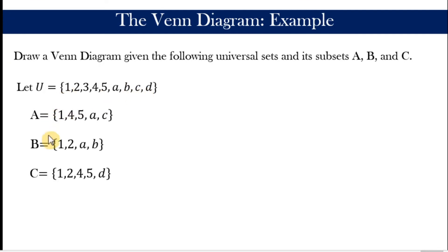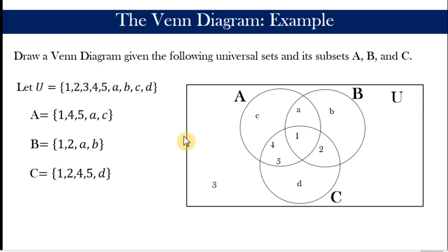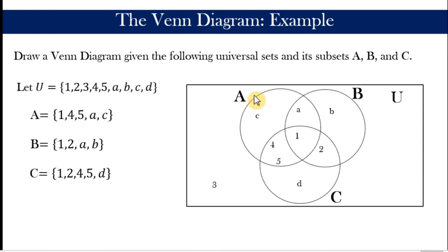Let us consider an example. We are given a universal set containing certain elements, and three subsets: set A, B, and C. We draw a Venn diagram equivalent to this. A rectangular region denotes the universal set, and we ensure that all elements — one, two, three, four, five, A, B, C, D — are all inside the rectangle.